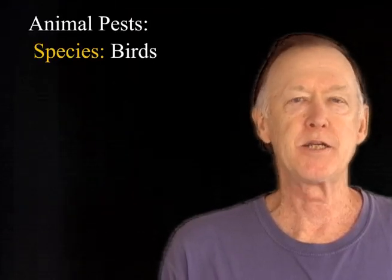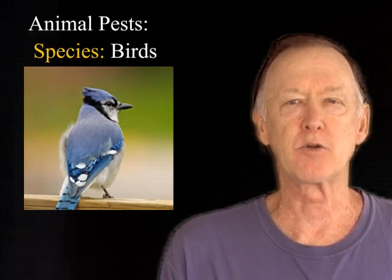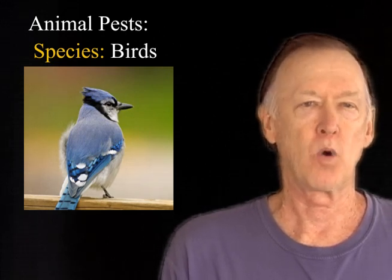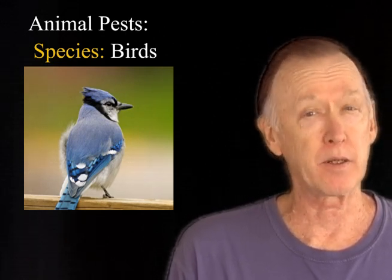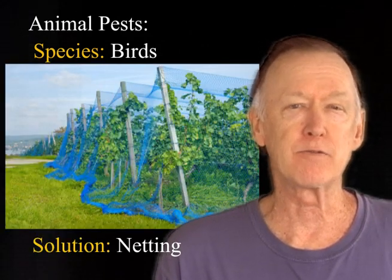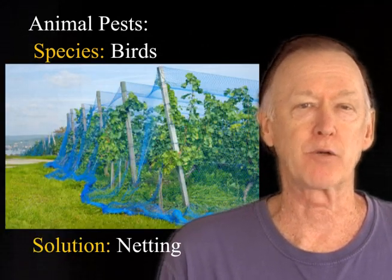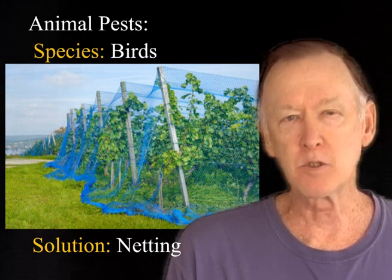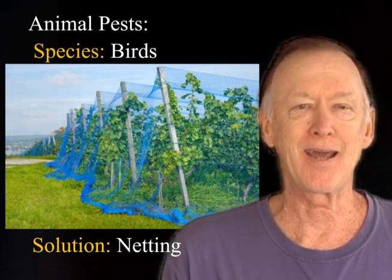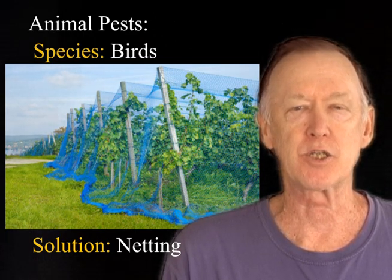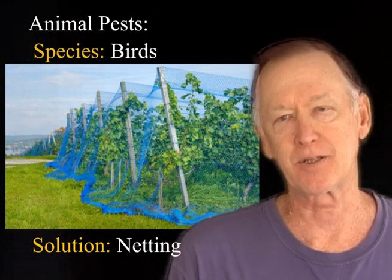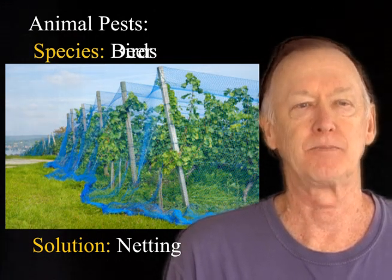As mentioned earlier, deer and birds are the most common animals that raid vineyard grapes. One of the most effective ways to repel birds is the use of nets. Draping netting over your vines will discourage the birds. Be sure to remove those nets during the wintertime, because leaving the nets on trellises during the cold season might damage the plant's productivity and growth in the next season.